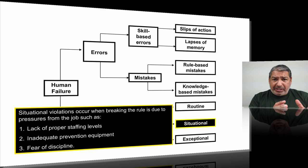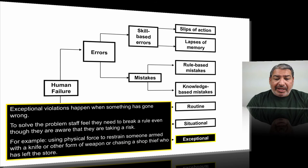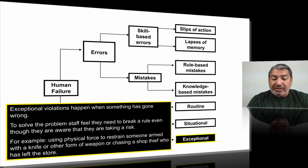Exceptional violations happen when something has gone really wrong and staff feel they need to break the rule to solve a problem, even though they're aware of the risk. For example, using physical force to restrain someone armed with a knife, or chasing a shop thief who has left the store. I get this a lot, particularly with self-harm as an example.